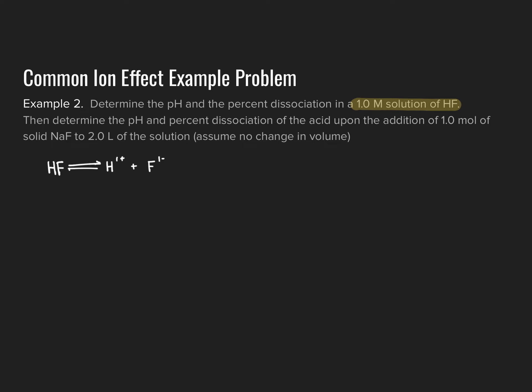We write the dissociation equation for hydrofluoric acid: HF → H⁺ + F⁻. Setting up the ICE table: the initial concentration of HF is 1.0 M, and initial concentrations of H⁺ and F⁻ are essentially zero. The system shifts right to establish equilibrium, so HF changes by −X, while H⁺ and F⁻ each change by +X. At equilibrium: [HF] = 1.0 − X, [H⁺] = X, and [F⁻] = X.